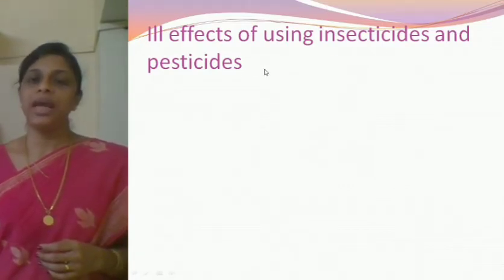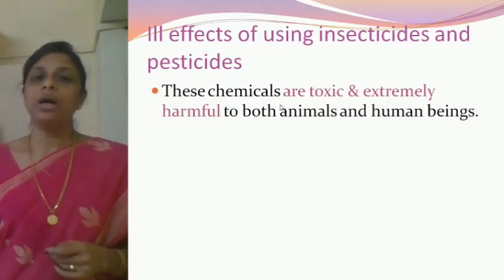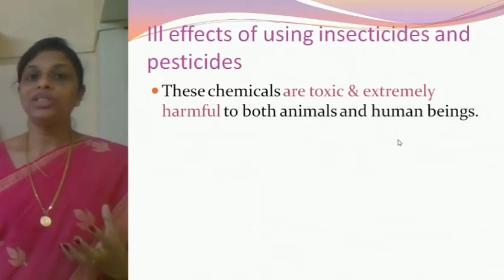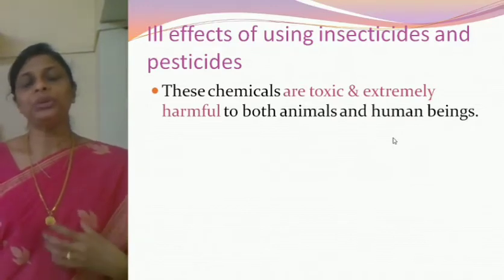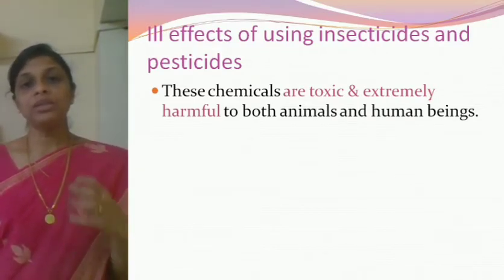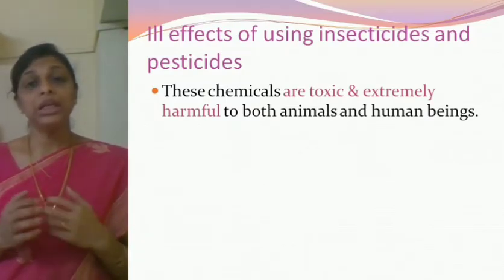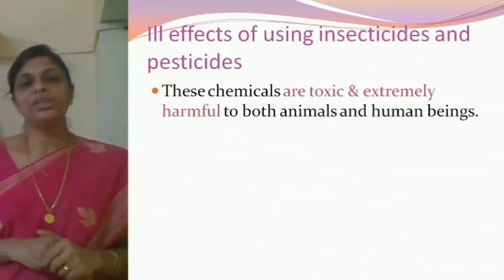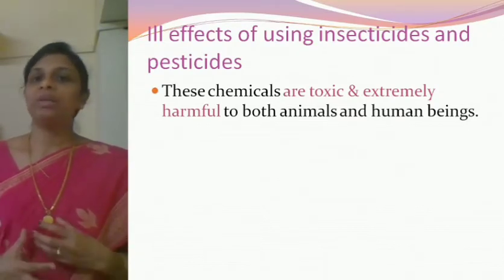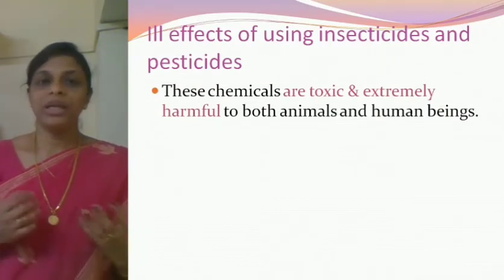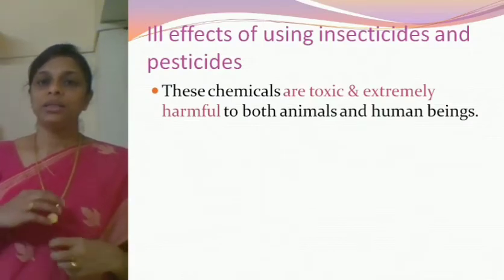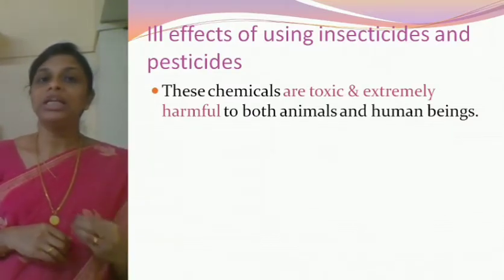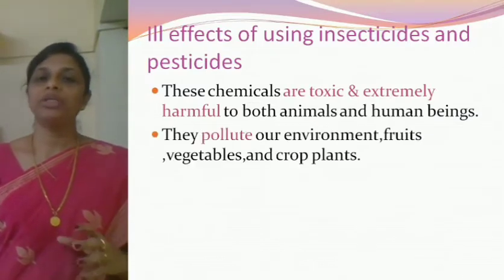Ill effects of using insecticides and pesticides. The first effect: these chemicals are toxic and extremely harmful to both animals and human beings. These chemicals are toxins and when these toxins enter our human body or the body of other animals, it leads to various diseases. We all wash vegetables and fruits thoroughly at home to remove traces of insecticides and pesticides. These chemicals are highly toxic — that is the first and foremost side effect.